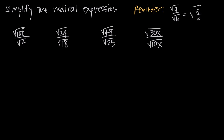In this first example, we have the square root of 100 over the square root of 4. There are a couple of ways we can go about this. Using the formula, we can say that this is equal to the square root of 100 over 4 — we take the values and put them inside one square root instead of two. Then we simplify the fraction inside: 100 over 4 is equal to 25, so this simplifies to the square root of 25, which equals 5.